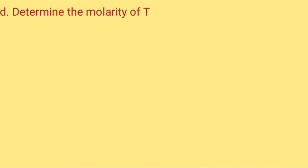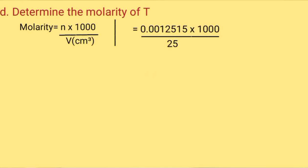Determine the molarity of solution T. The volume of T that reacted was the pipetted volume of 25 cm³. Molarity equals moles times 1000 over volume = 0.0012515 times 1000 over 25, which gives 0.05 molar.